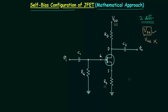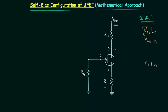Now we will simplify this circuit. We are performing DC analysis, and we already know C1 and C2 are the coupling capacitors. They are open-circuited for DC signals, so I will remove the portions of the circuit that do not come into the picture. This is how the circuit will look.